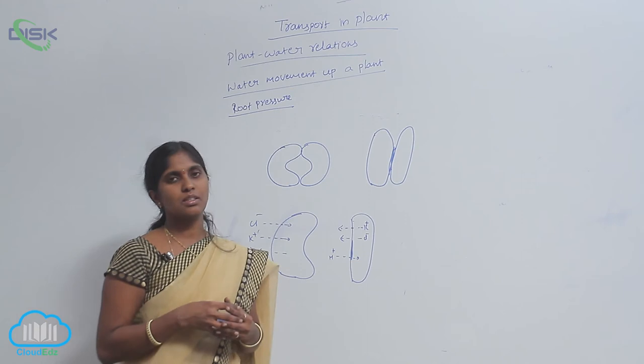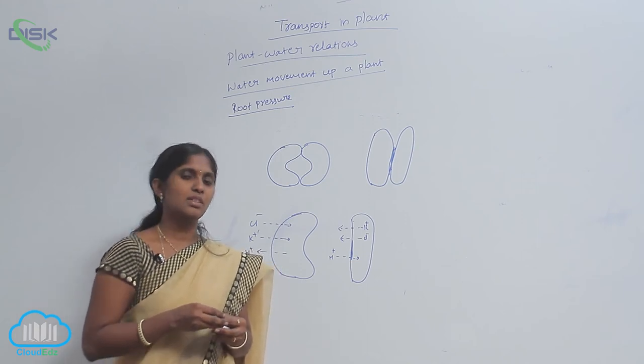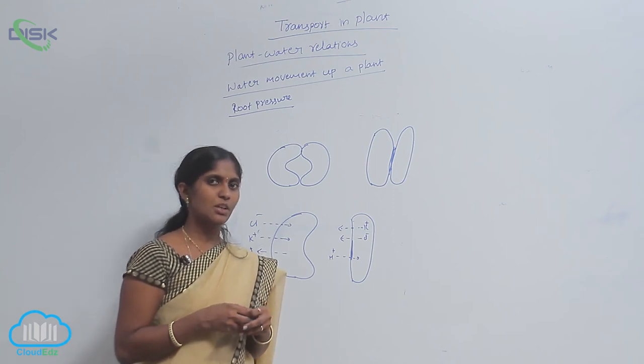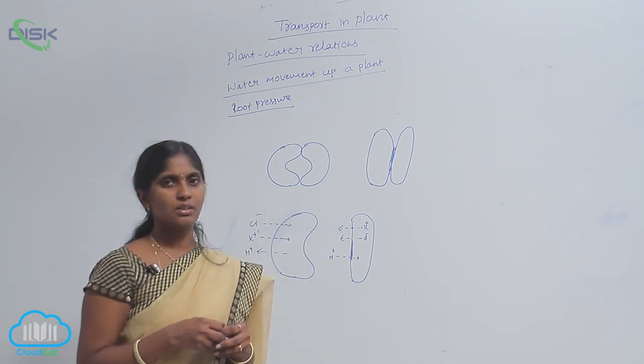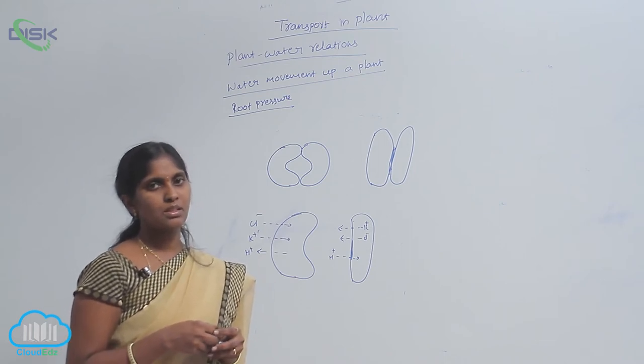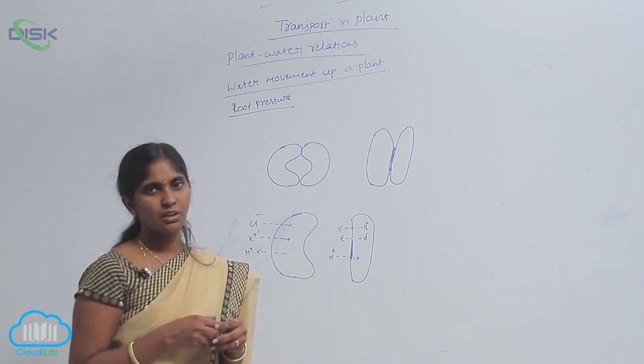The transpiration is carried at stomata. The stomata have two cells. The two cells are kidney-shaped cells. They are called guard cells. So between the guard cells, the stomata pore is there, through that pore the gaseous exchange is carried out.